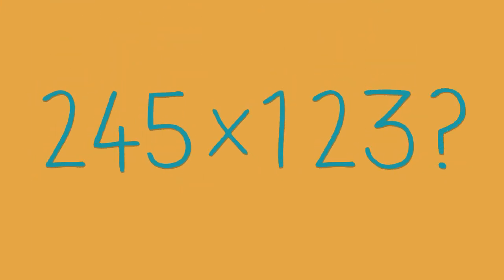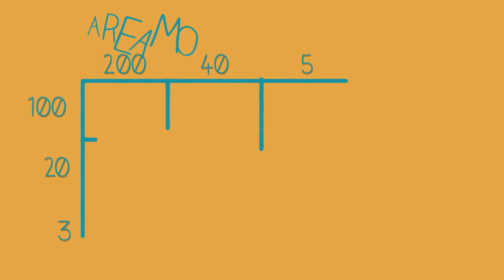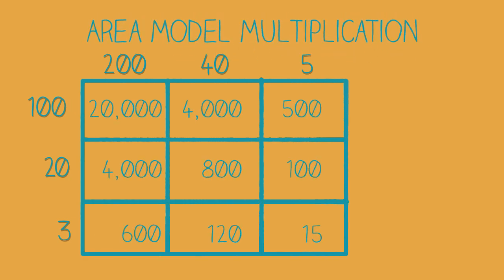Do you cringe when you see a math problem like this? 245 times 123 equals ugh. At Singapore Math Club, we use the Area Model Multiplication Strategy and turn a challenging multiplication problem into a simpler addition problem.